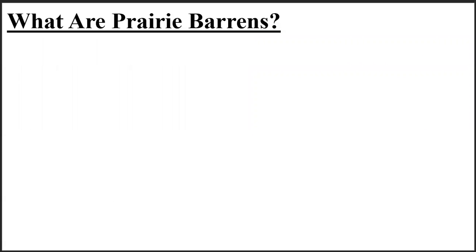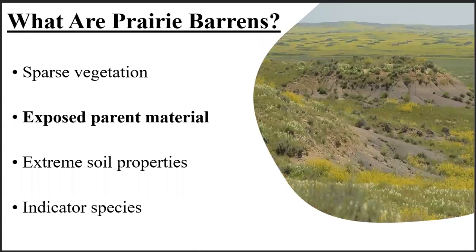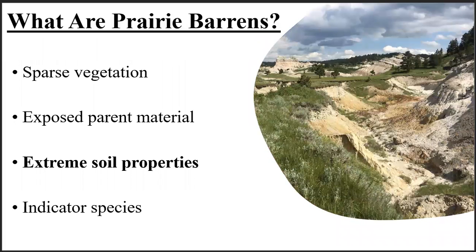Let's begin with an introduction to prairie barrens. Prairie barrens are grassland habitats characterized by sparse but not completely absent vegetation, the presence of exposed parent material, which is the underlying rock from which soil is formed. Prairie barrens tend to have extreme soil properties which make it hard for plants to grow, such as being very sandy or clay-rich, being very acidic or alkaline, being extremely salty, or having high concentrations of toxic elements.